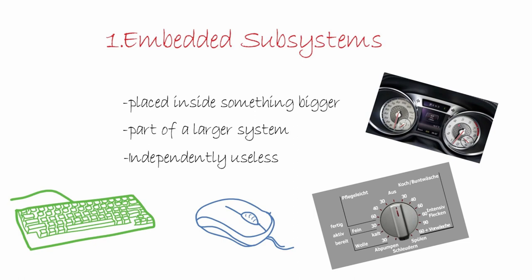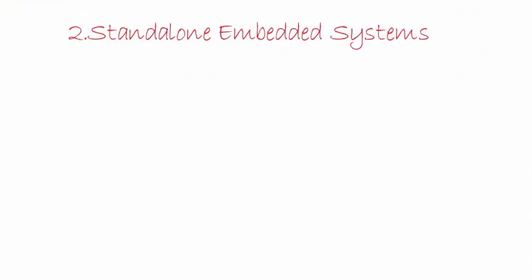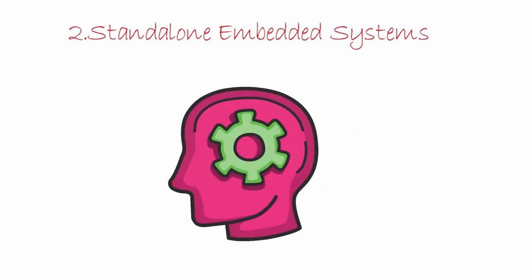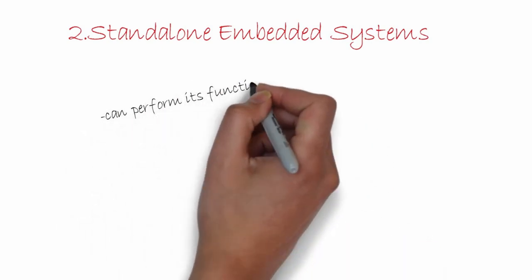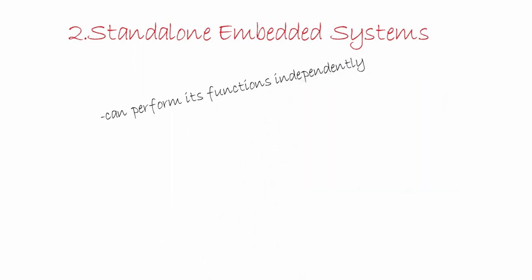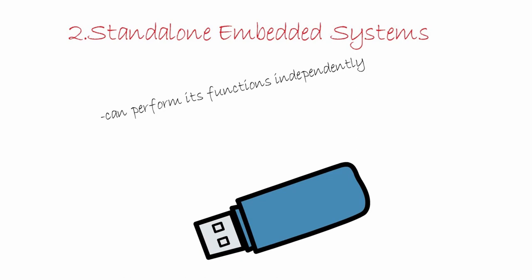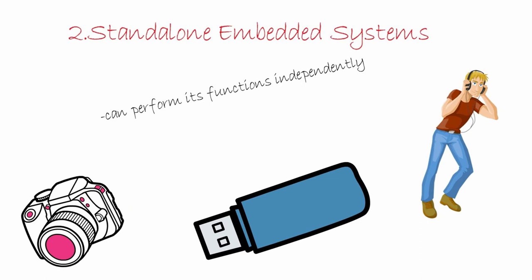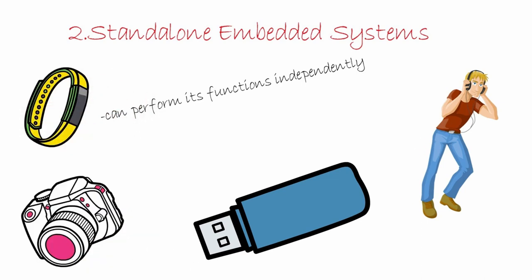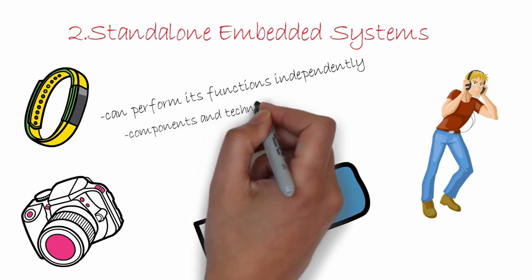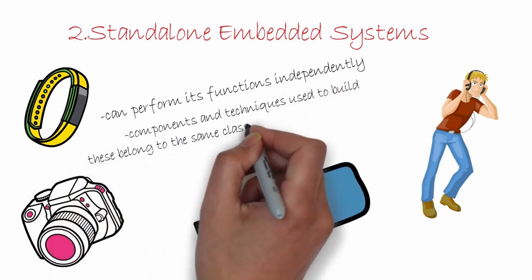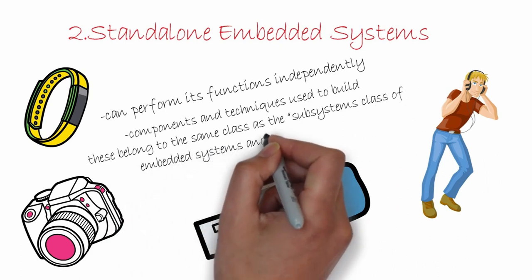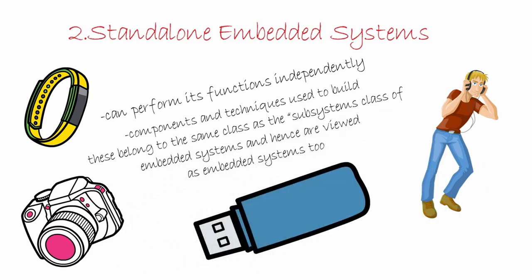Next, let's look at another class called standalone embedded systems. These are devices that can perform their function independently. Examples include USB drives used to store data, MP3 players which can play music, digital cameras which can take pictures, and digital watches which tell us the time. Although they are not embedded into something bigger, the components and techniques used to build them belong to the same class as subsystems, and hence they are viewed as embedded systems too.